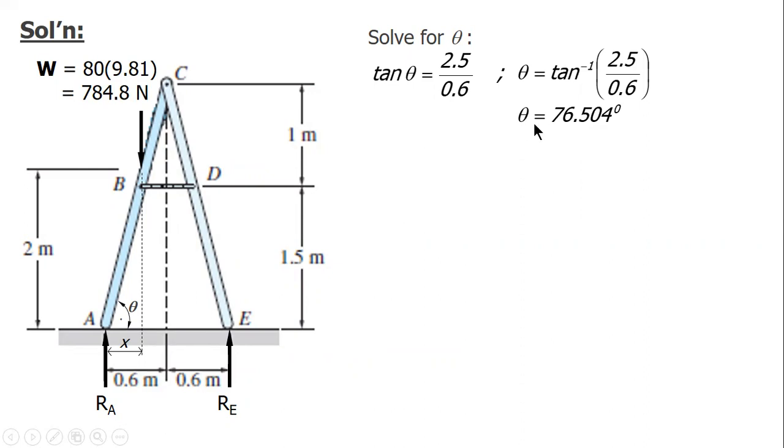Since you already have theta, you can now solve for X. Consider this right triangle. Tangent theta is opposite 2 and then adjacent X, so X is 2 over tangent theta. 2 over tangent 76.504, X is equal to 0.48 meters.